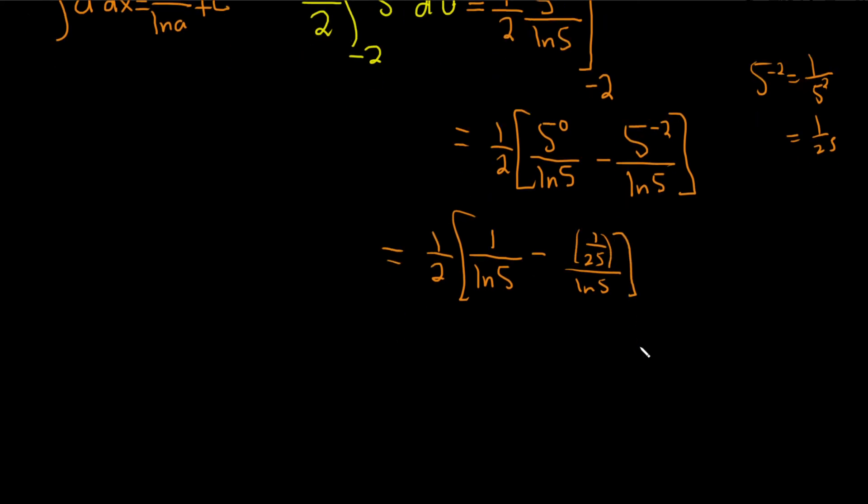Let's keep going here. We can actually perform a subtraction now because the denominators are the same. So you can subtract 1 minus 1 over 25. So 1, you can think of 1 as 25 over 25. It's the same thing. So 25 over 25 minus 1 over 25 is 24 over 25. And that's all being divided by the natural log of 5.